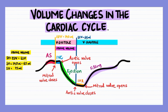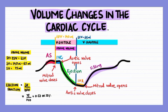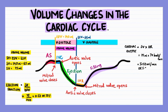The fraction of the end diastolic volume that is ejected from the heart is called the ejection fraction. Since the stroke volume is the volume of blood ejected in one beat, the ejection fraction is the stroke volume over the end diastolic volume, and that turns out to be 0.53 or 53 percent. The cardiac output is the volume of blood pumped out by the heart per minute, that is the stroke volume multiplied by the heart rate, which turns out to be 5,250 milliliters per minute or approximately 5 liters per minute.